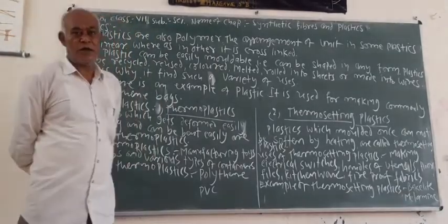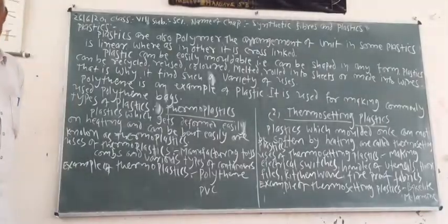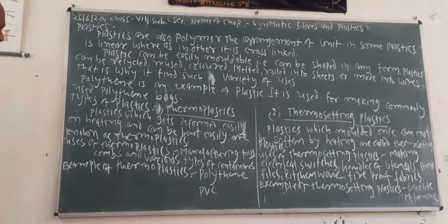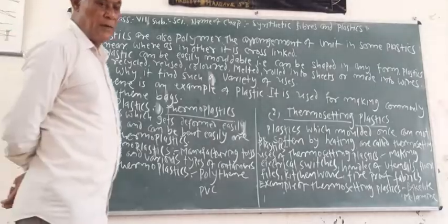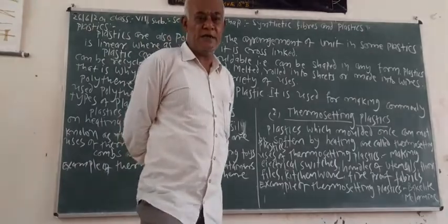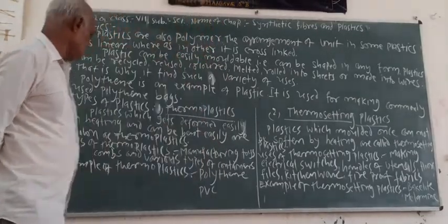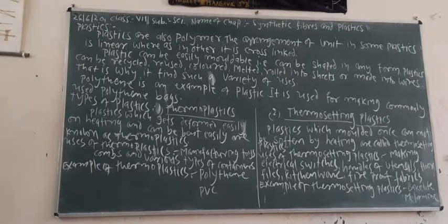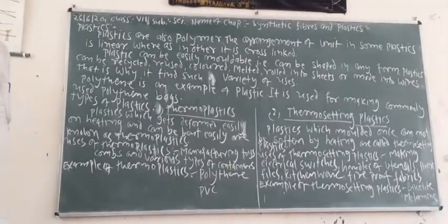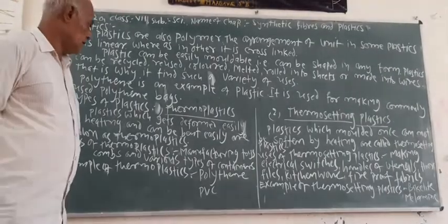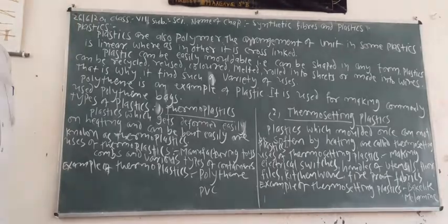What are thermoplastic and thermosetting plastic? Thermoplastic is plastic which gets deformed easily on heating. If we heat the plastic, it can be changed or bent easily. Plastics which are flexible and get deformed on heating are called thermoplastics.